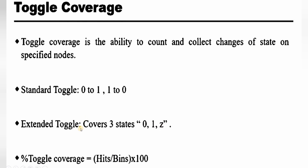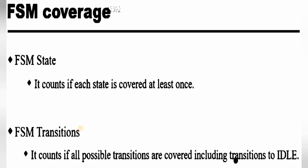FSM coverage is used whenever there is a finite state machine. It counts whether each state is covered at least once, and checks that all possible transitions are covered, including transitions related to the idle state. In this way there are different types of coverage.